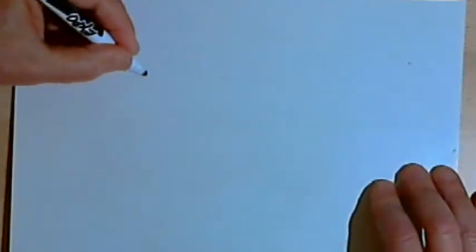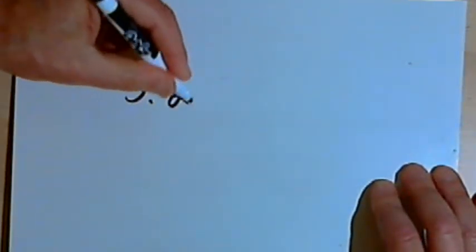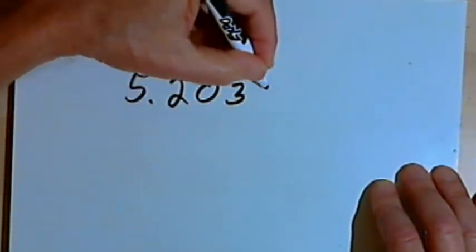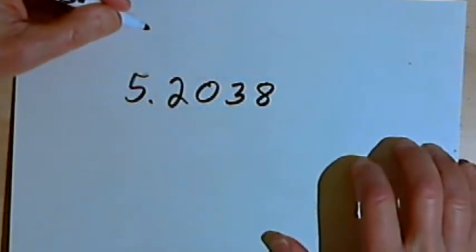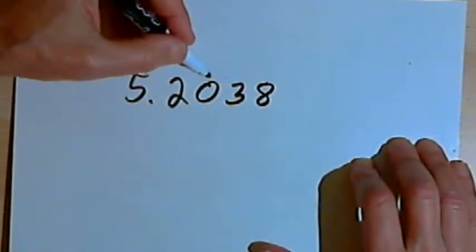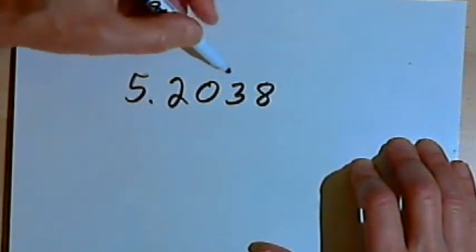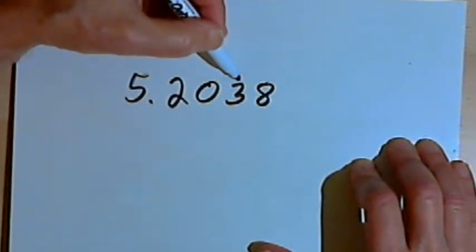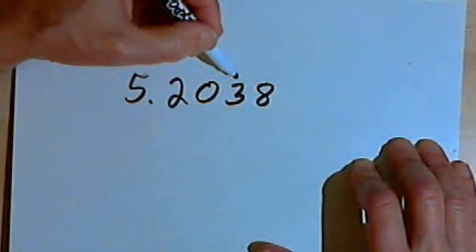Here's another example. Let's take the number 5.2038, and let's say I want to round this to the nearest hundredth, or to two decimal places. So I'll go one decimal place to the right. That will take me to where the 3 is.